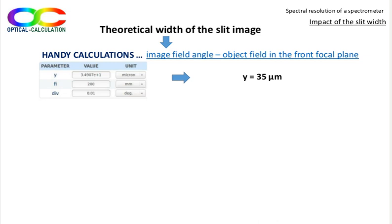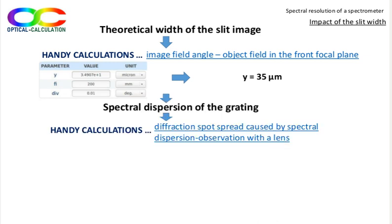Now, we need to know to what spectral spread corresponds to these 35 microns on the detector matrix. The calculation diffraction spot spread caused by spectral dispersion, observation with a lens for reflective grating, enables to calculate the lateral shift of the spot obtained in the focal plane of a lens, or of a mirror, after diffraction by a grating, and for a spectral shift of 1 nanometer.